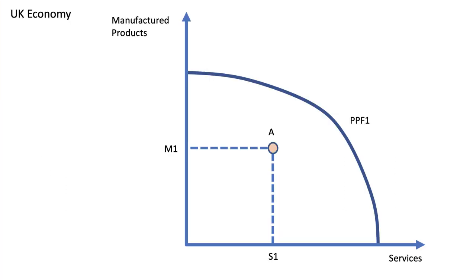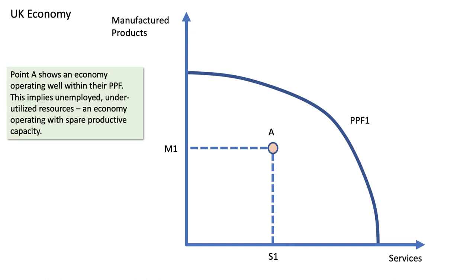Here we have an economy that can make manufactured products and services. And initially we're at point A, producing M1 manufactured goods and S1 services. Point A shows an economy operating well below or well within their production possibility frontier.